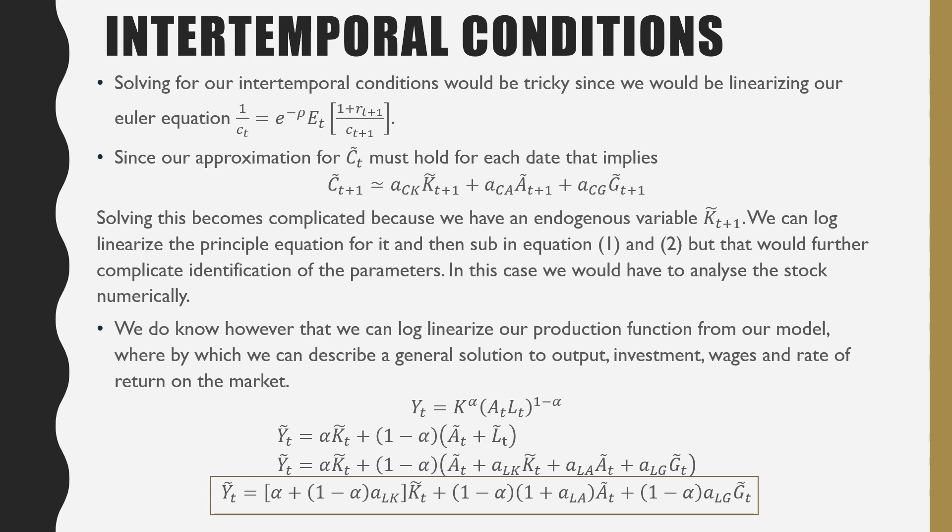Since approximation of our Ct must hold for all periods, we have the same sort of equation for the next one, which is basically equivalent to equation 1, but we're just adding t plus 1 to all of our subscripts. Solving this becomes more complicated because we have an endogenous variable Kt plus 1.